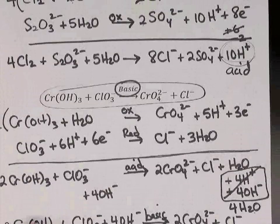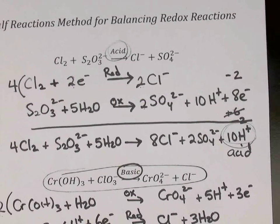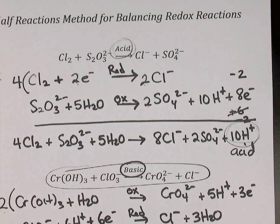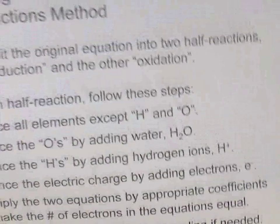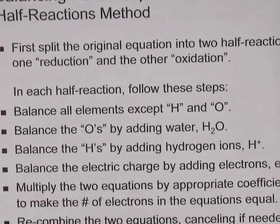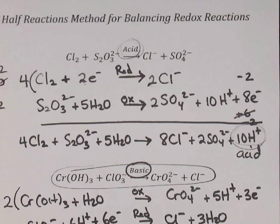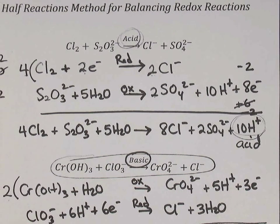So that's balancing redox reactions with the half-reaction method in both acid and basic solutions. Every time you do a step, say the steps to yourself as you go through the balancing process — if you repeat these steps in your head each time, you'll know them without having to memorize them later.